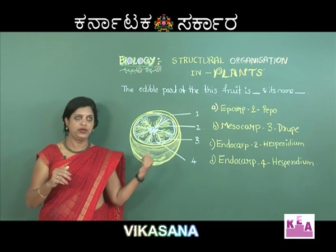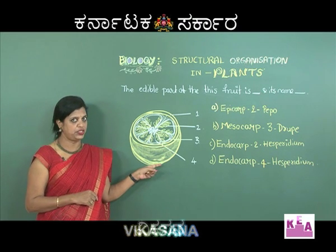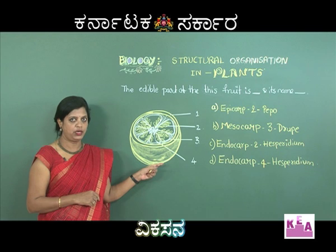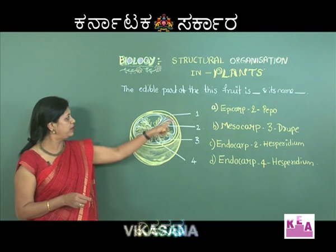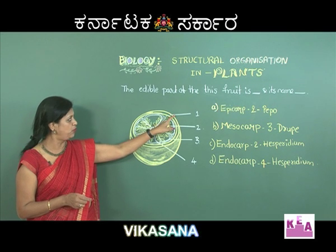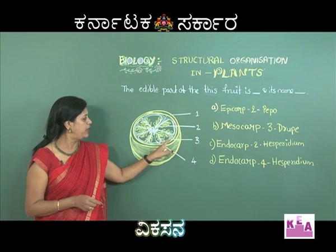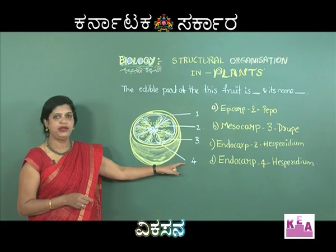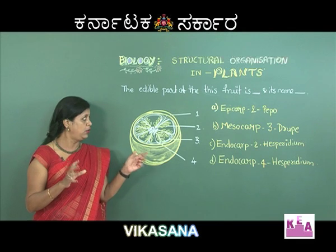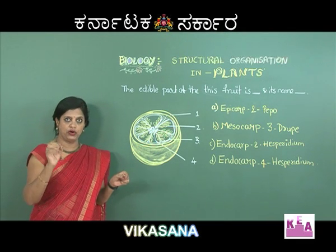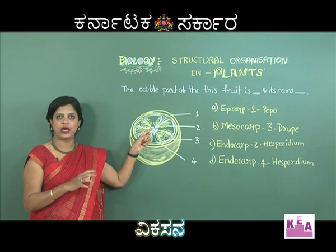From the diagram given, you can observe it is a fruit belonging to the citrus family — it may be an orange or a lemon. The parts are labeled: the outer oily part with oil glands is the epicarp. Then comes the mesocarp, then comes the endocarp.